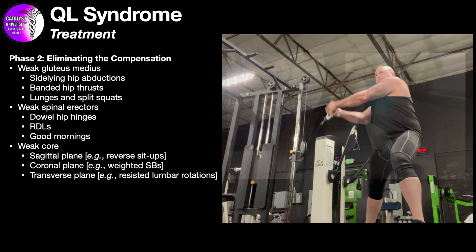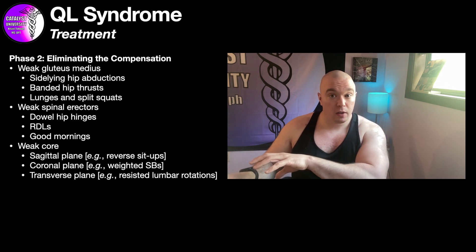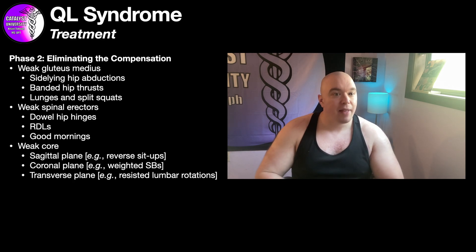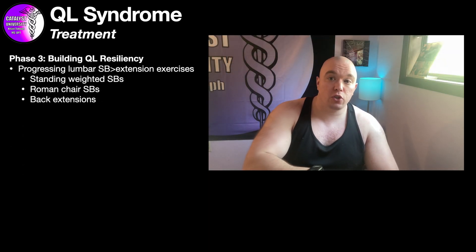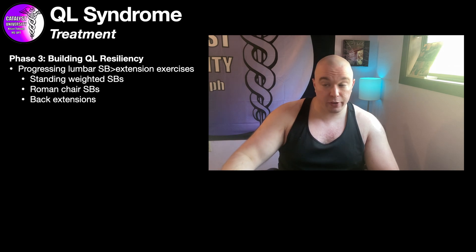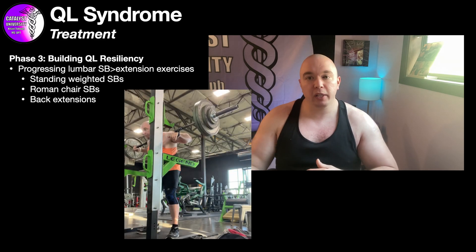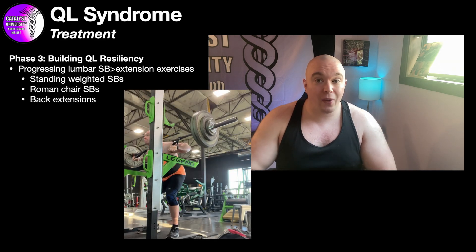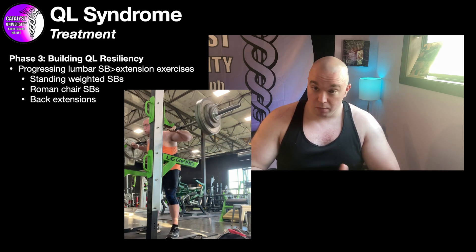We just start strengthening up these muscles, and as we get them stronger — assuming we got our diagnosis correct — that QL should start loosening up. Phase three is really a continuation of phase two, where we keep progressively overloading the strengthening and get into more advanced exercises. Yes, we're strengthening the prime movers like the spinal erectors and the obliques, but these are also strengthening the QL and making it more resilient, making it less likely that it will tighten up in the future.